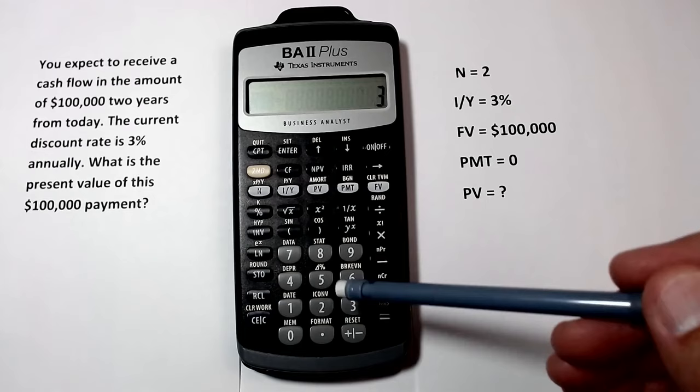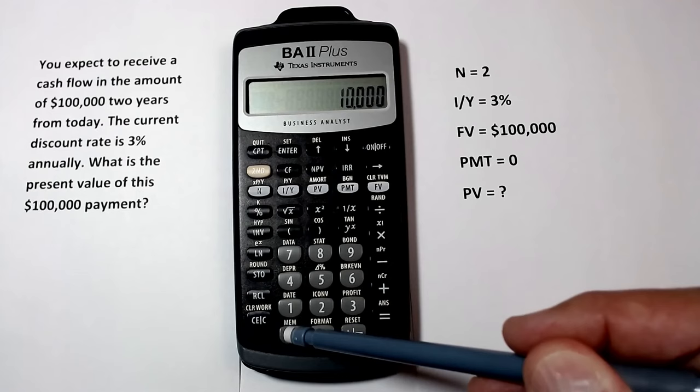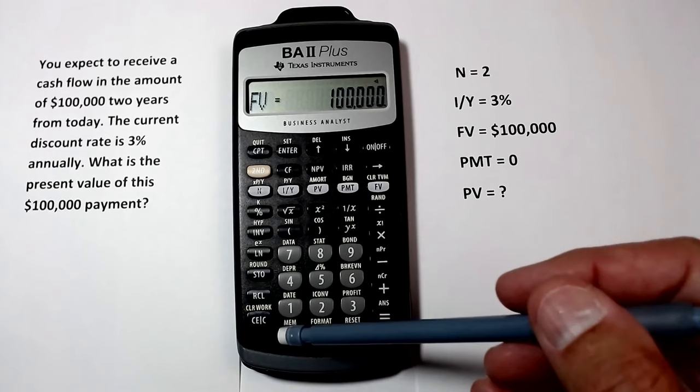The future value will be $100,000. Notice that the future value was entered as a positive number. However, we can think about this as a positive cash flow to us. There's no payment in this problem, so payment once again is zero.